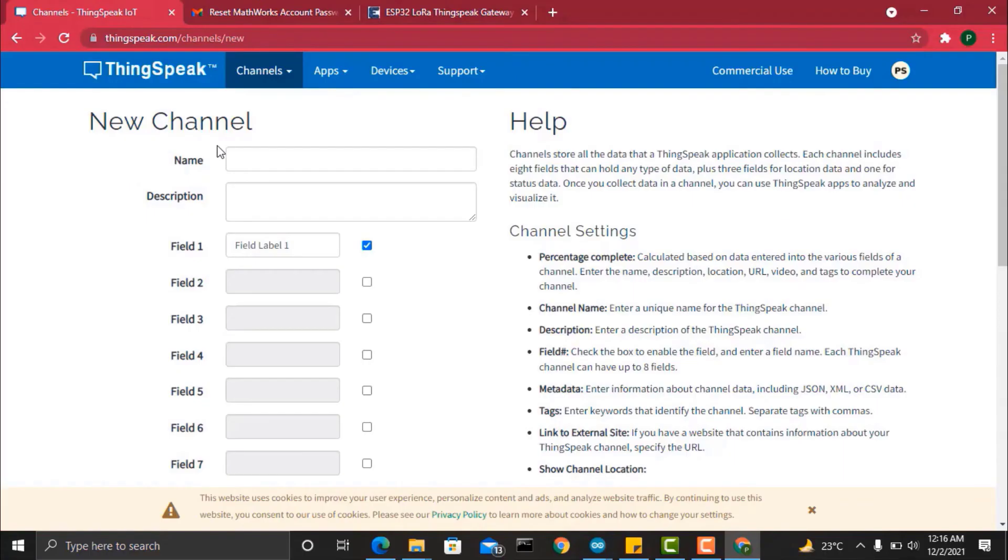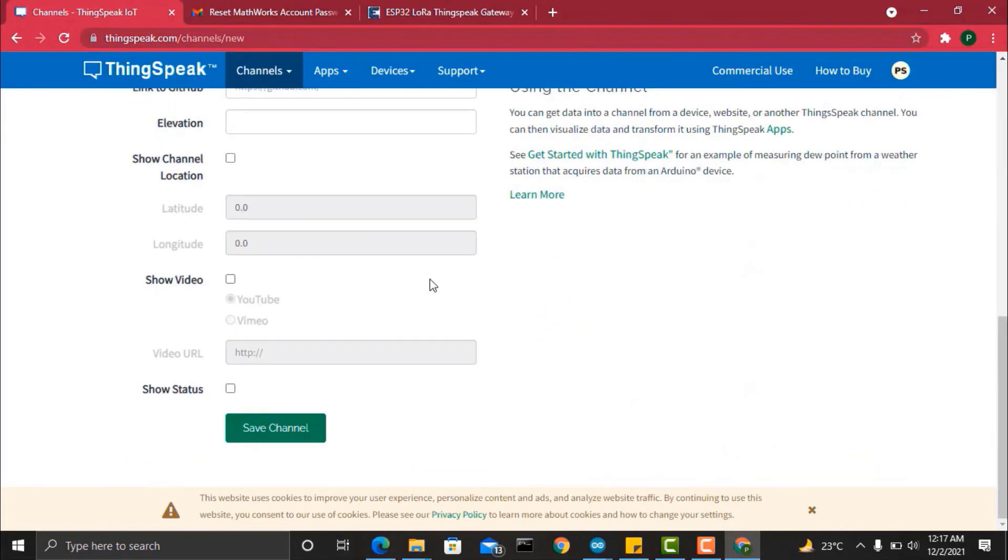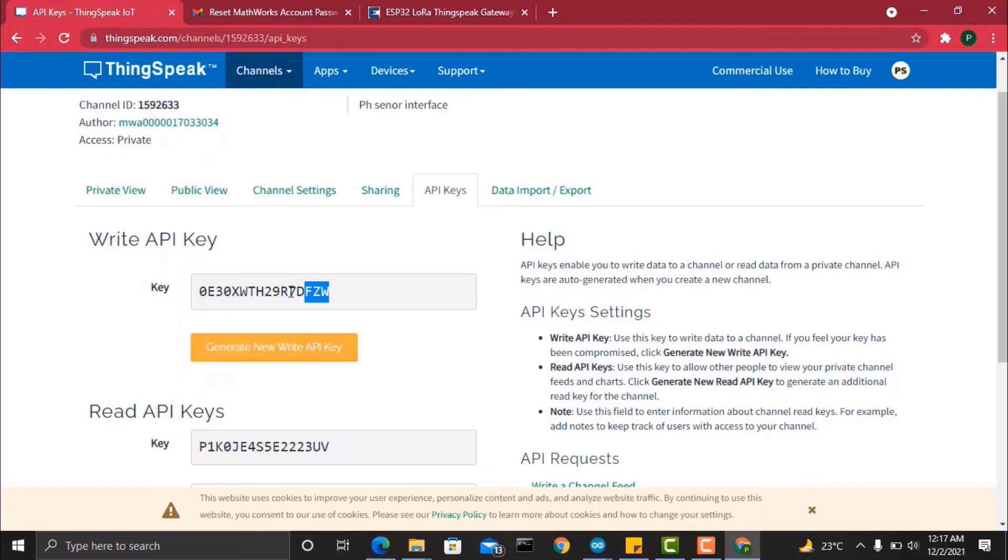Now let's move to the IoT part of the project. We have used ThingSpeak for this. Create a new channel in ThingSpeak, give any name and also add the description as well as the field. Go to the API key part and copy the API key. We will use this API in the code to receive the pH data on ThingSpeak server.